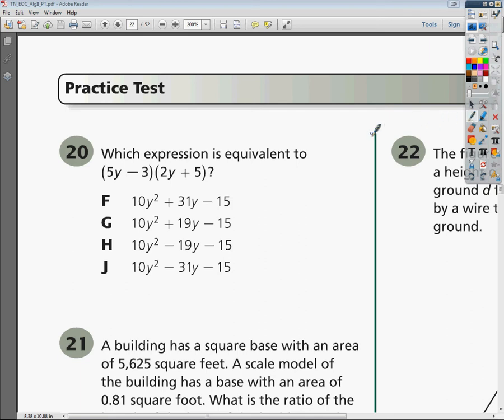Hello, today we're going to do problem number 20. Which expression is equivalent to (5y - 3)(2y + 5)? So we're going to use the FOIL method.